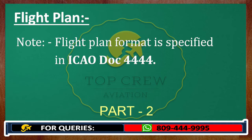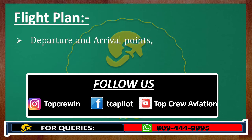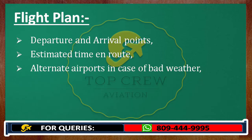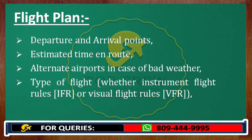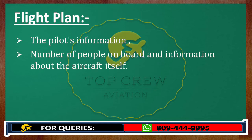In a flight plan, we generally include basic information such as departure and arrival routes, estimated time and route, alternate airports in case of bad weather, type of flight — whether instrument flight rules or visual flight rules — the pilot's information so that we can contact the pilot in case of emergency, number of people on board, and information about the aircraft itself. These are the basics, though we would include other things as well.